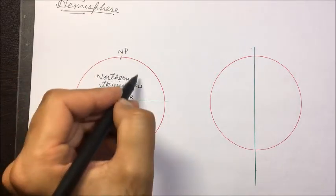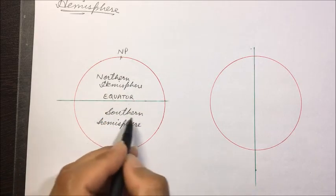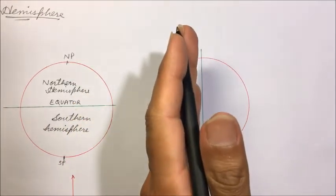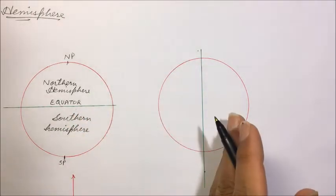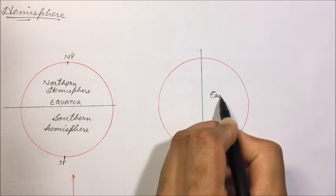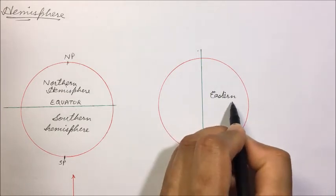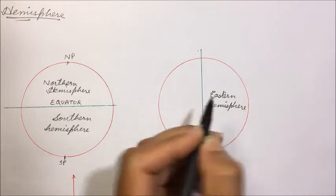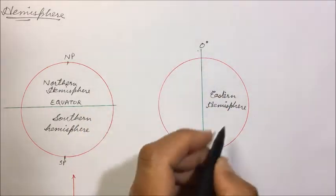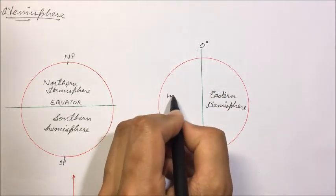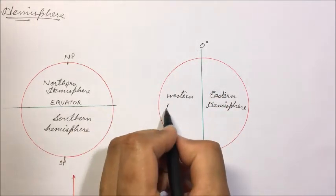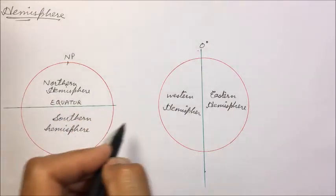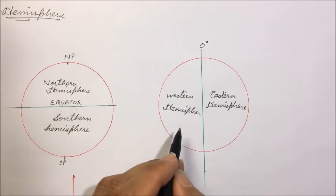On the north side of the equator is the northern hemisphere, and on the south side is the southern hemisphere. Similarly, the 0-degree prime meridian and the 180-degree meridian divide the earth into two equal halves — the eastern hemisphere, lying on the eastern side, and the western hemisphere on the west side of the prime meridian. So the equator and the prime meridian together divide the earth into four hemispheres.